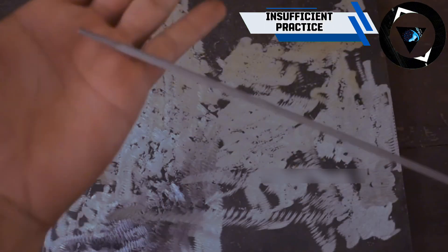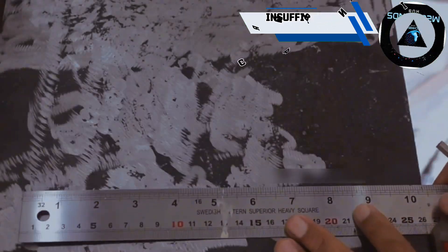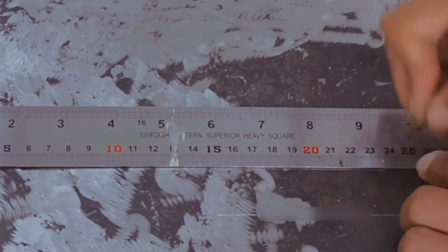Welding is a skill that requires a lot of practice to master. If you don't practice enough, you might end up with bad welds, slow work, or wasted material. You might also make more mistakes along the way. To improve your welding skills, you need to do four things.